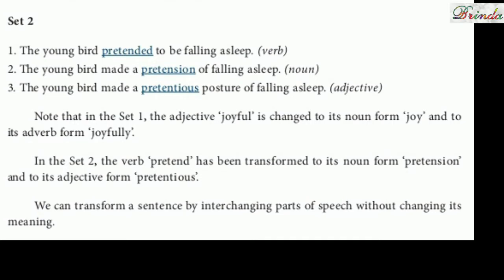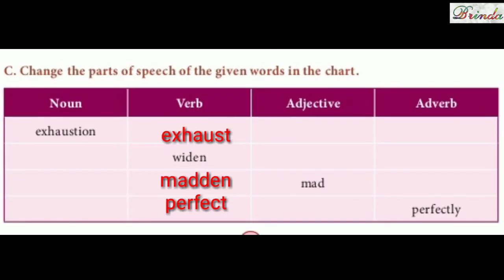Shall we do Section C? Change the parts of speech of the given words in the chart. Here there is a chart and we are going to change the forms. Noun means name, place, thing. Verb means action word. Adjective — the word that gives more meaning to the noun. Adverb — it qualifies the verb.